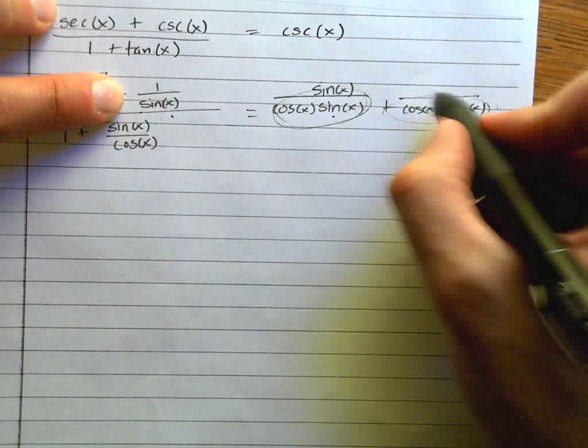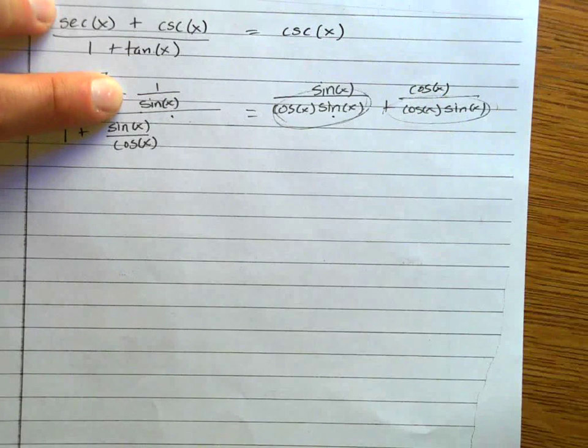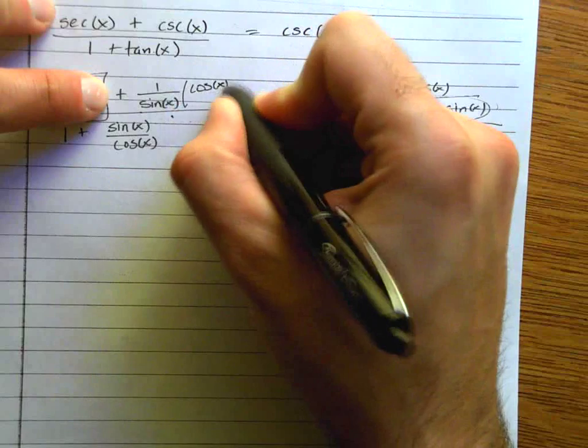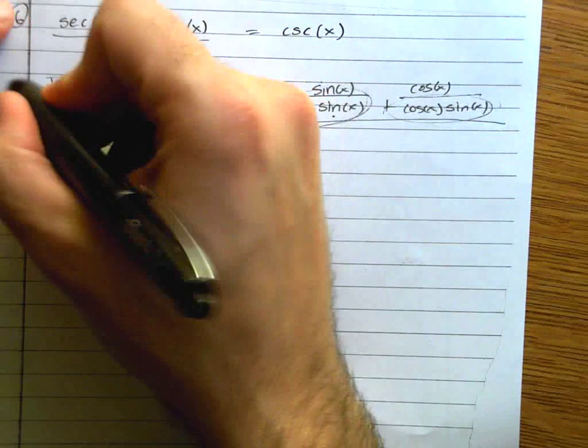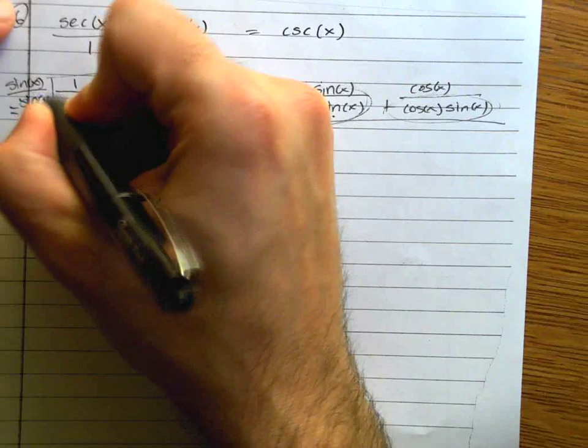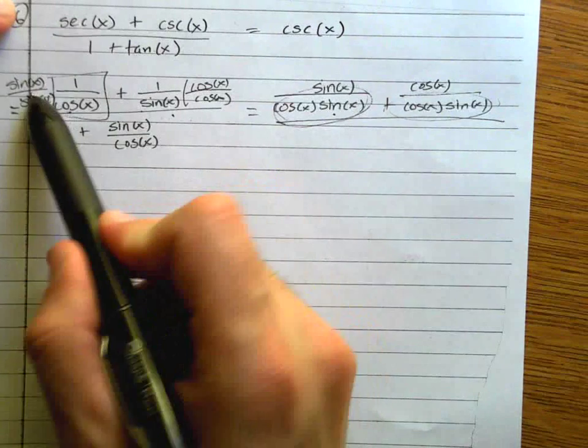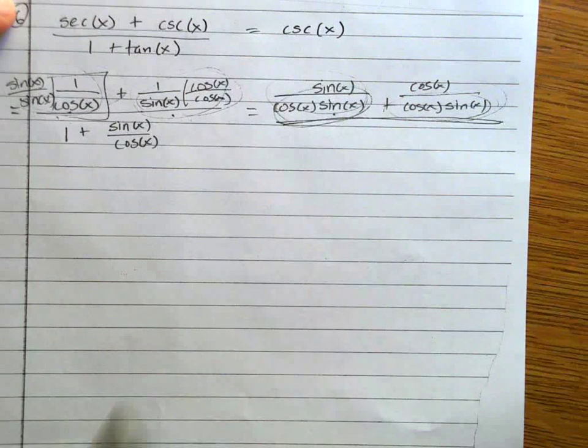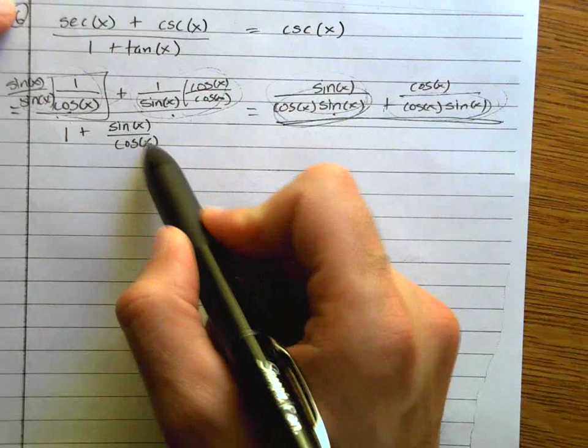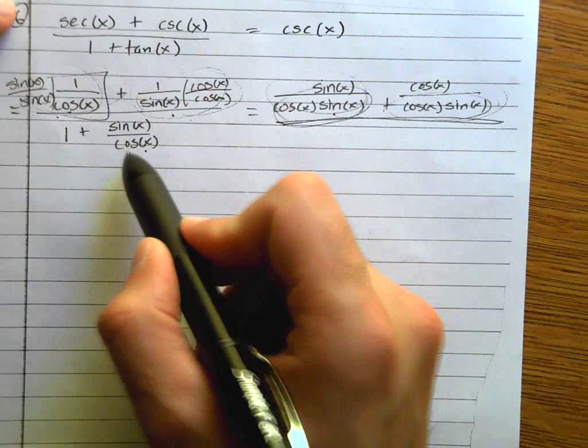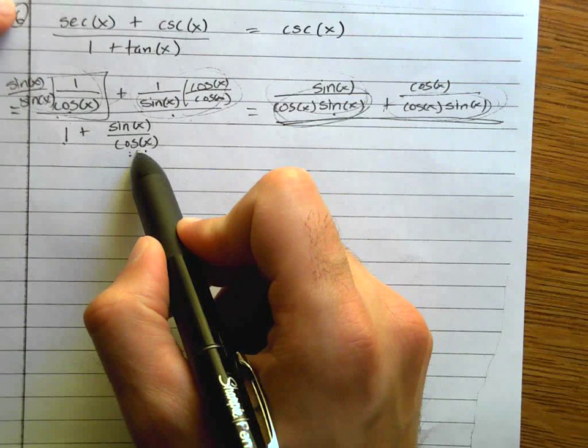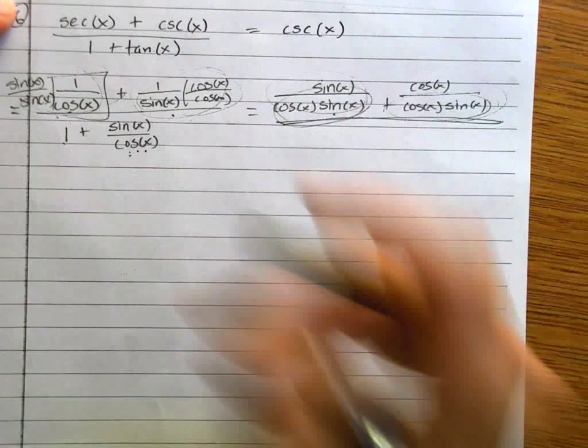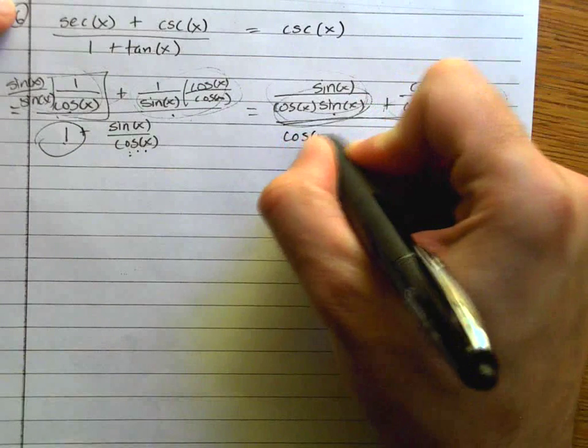Now what did I actually do? Well, the background work was I multiplied this thing times cosine over cosine and I multiplied this thing times sine over sine. Yeah, I multiplied it by one. So see how this became this and this became this. Yep, that's true. You got to do it again. How do I add one plus sine over cosine?